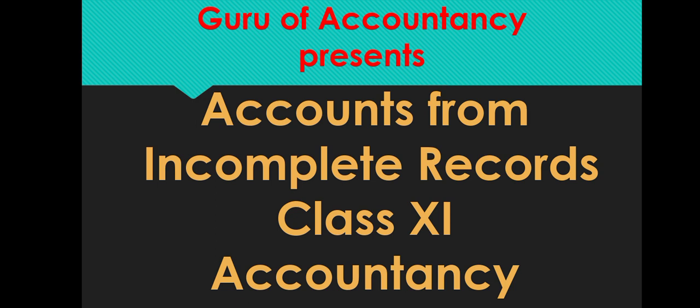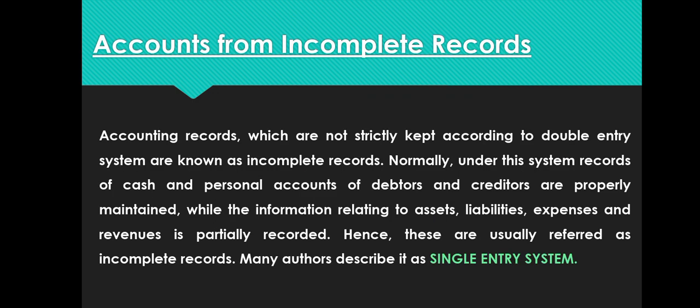Accounts from Incomplete Records is also known as single entry system, but it is not actually a single entry system because there is no such system — there is only a double entry bookkeeping system. Accounting records which are not strictly kept according to the double entry system are known as incomplete records.